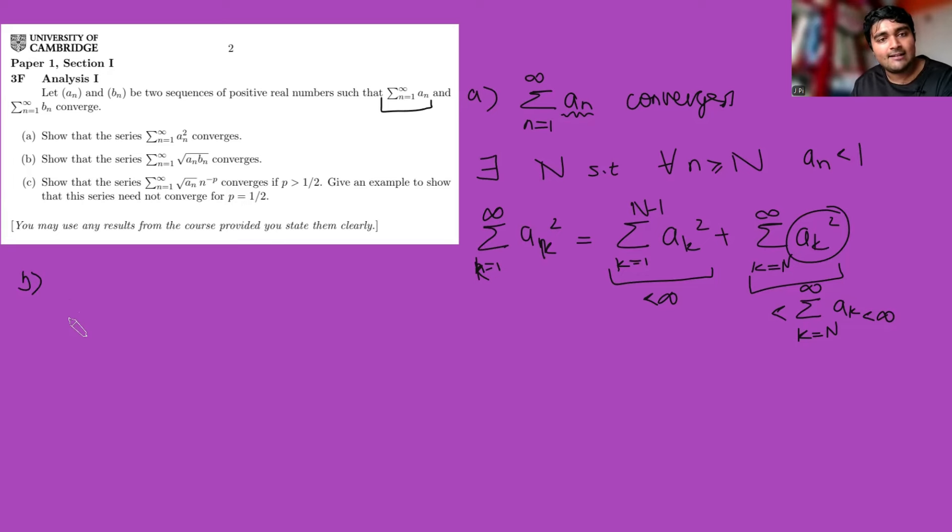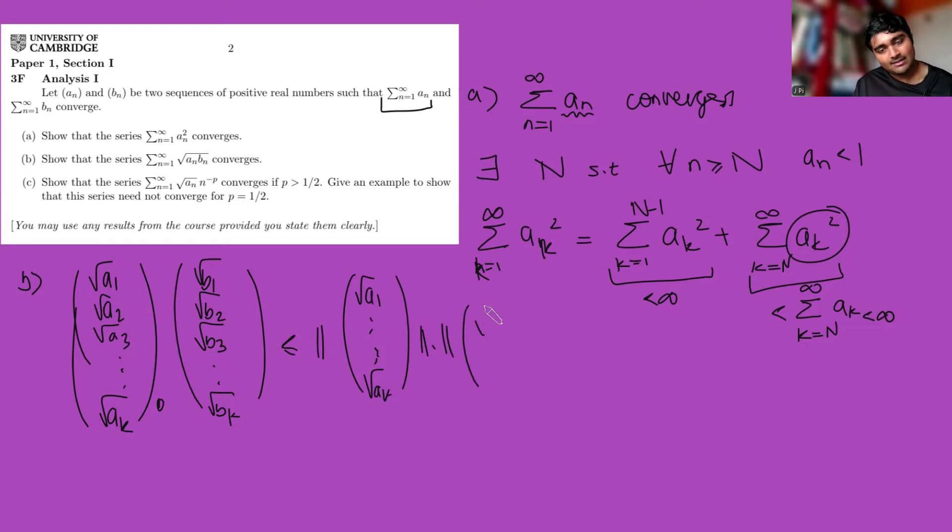Here we're going to consider, so the way I always think about this is this sum here is kind of like if I did root a1, root a2, root a3 and so on up to root a_k as a vector dotted with root b1, root b2, root b3, blah blah blah, all the way up to root b_k. This is the way I think about it, it's a dot product. Now the Cauchy-Schwartz inequality says that this guy here must be less than or equal to the magnitude of each of these vectors.